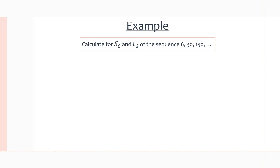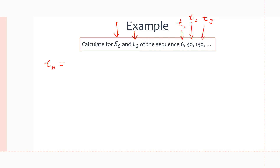Here's our first example: calculate S6 — the partial sum of the first six terms — and calculate the sixth term of the sequence 6, 30, 150, and so on. We are not given the sixth term, so we have to calculate it. We have t1 = 6, t2 = 30, and t3 = 150. There should be a pattern, and we can create a recursive formula to represent the sequence.